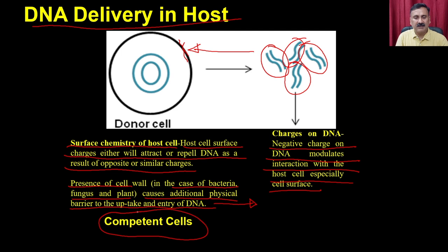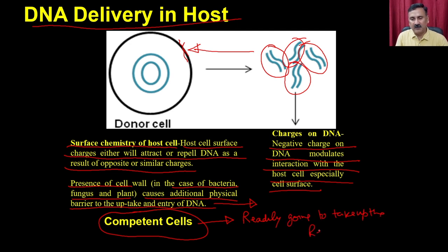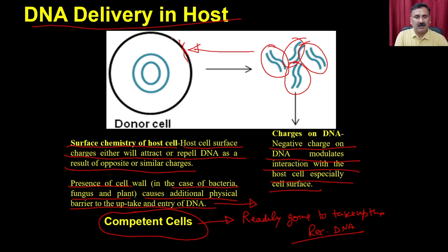A competent cell is a cell that is readily able to take up recombinant DNA. You need to prepare competent cells because wild-type cells are not competent enough and will not take up the DNA on their own. You can treat them in a way that changes the surface chemistry of the cell surface, and that is how they will take up the DNA.